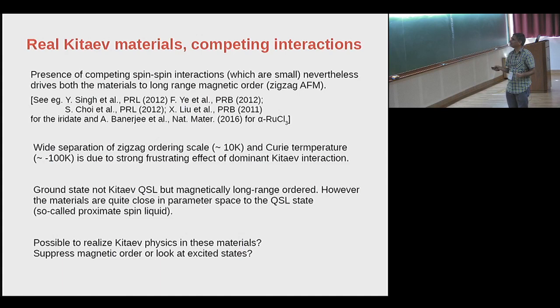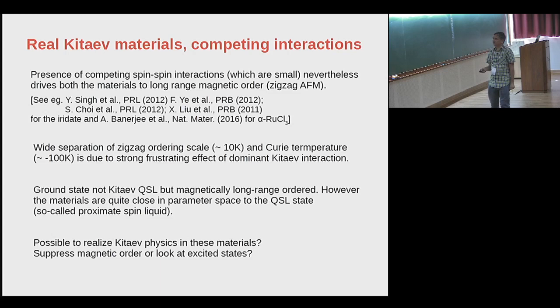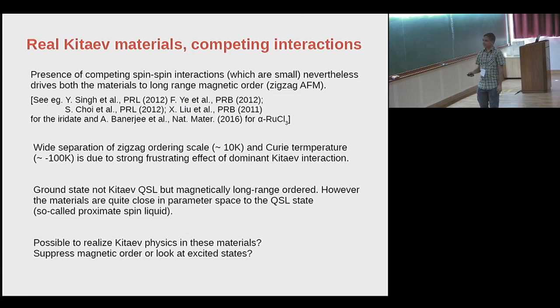The presence of competing spin-spin interactions, which are small if the distortions are not big, nevertheless drives both these materials into long-range magnetic order — zigzag antiferromagnetic for both systems. There is a very wide separation of the zigzag ordering scale, which is around 10 Kelvins, and the Curie-Weiss temperature, which is 100 Kelvins. This indicates the strong frustrating effect of the dominant Kitaev interaction. The ground state is therefore not a Kitaev spin liquid but magnetically ordered. However, these materials are quite close in parameter space to the Kitaev spin-liquid state — they are in a so-called proximate spin-liquid phase.